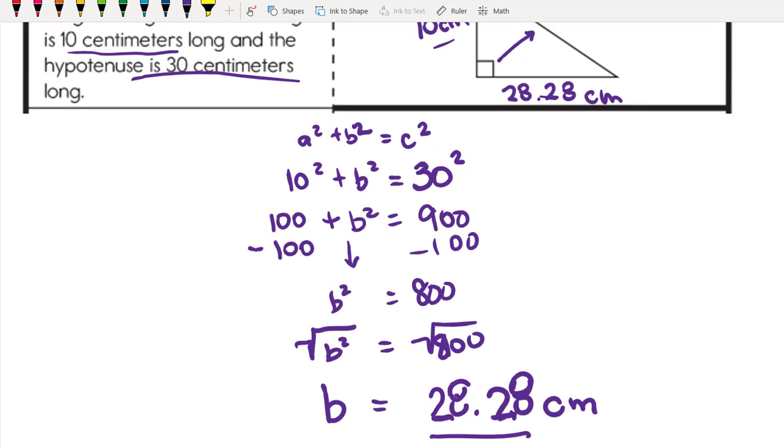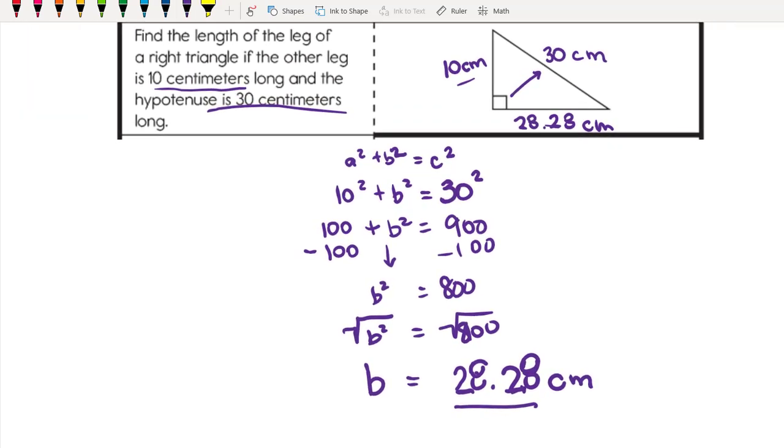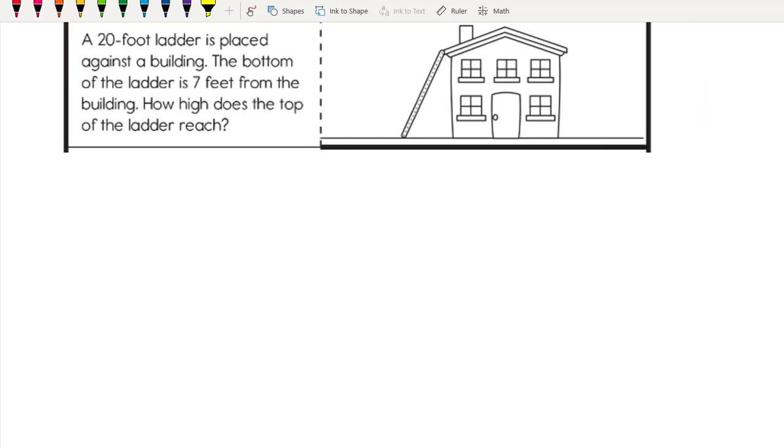Now we've got a situation where a 20-foot ladder is placed against a building. The bottom of the ladder is seven feet from the building. How high does the top of the ladder reach? Seven feet from the building goes right here for this leg. The ladder itself is 20 feet long, so the ladder is right here. That means this is the hypotenuse length.